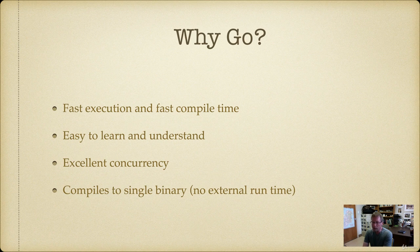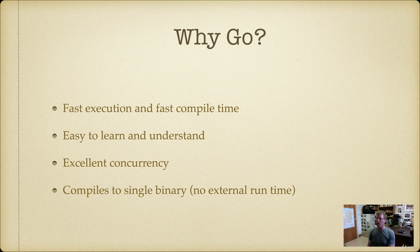Anyone who's worked with C is often used to waiting 15 or 20 minutes for their applications to compile, whereas in Go it just takes a few seconds, even for very large projects. Go is relatively easy to understand and learn, and it has an extremely powerful concurrency model that allows us to execute things at the same time. Finally, it compiles to a single binary, so you don't require an external runtime like Python or PHP — you end up with one executable file that you deploy to your production servers.